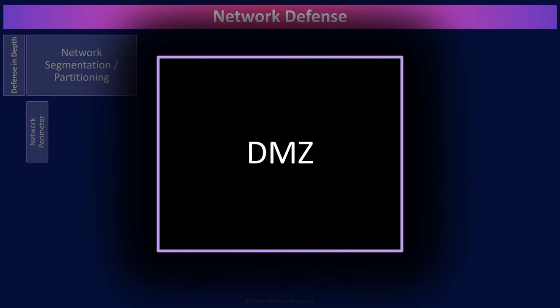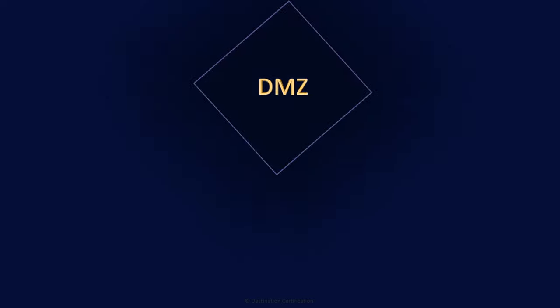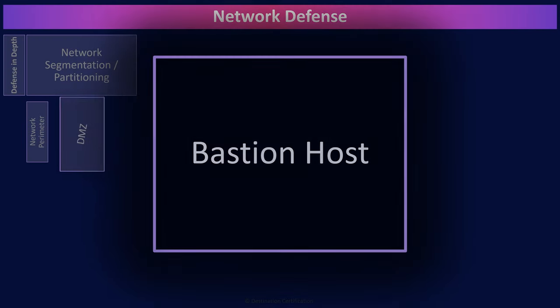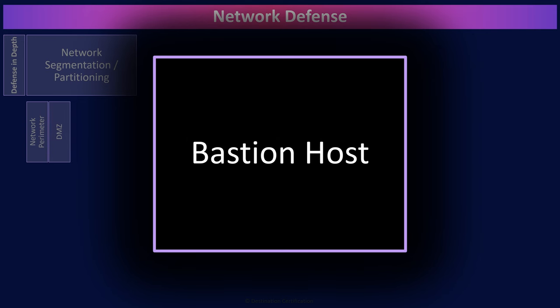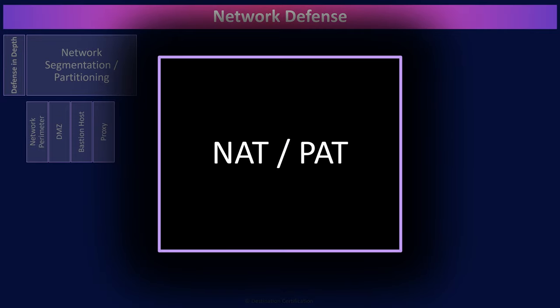DMZ stands for demilitarized zone. DMZs are a network segment where we put our bastion hosts — systems that are intentionally accessible by the public over the internet — like web servers, mail servers, and FTP servers. We fully expect these publicly-facing systems will be attacked. If they are compromised and they are within the DMZ, then the attacker does not have a foothold within our internal network. We severely restrict any traffic that can come from the DMZ into our internal network. A proxy is a server located between two devices, acting as an intermediary such that all traffic must pass through it, allowing the proxy to read, filter, control the communications, and even hide the devices behind it. NAT and PAT are examples of proxies.